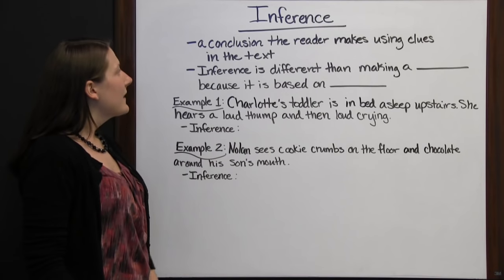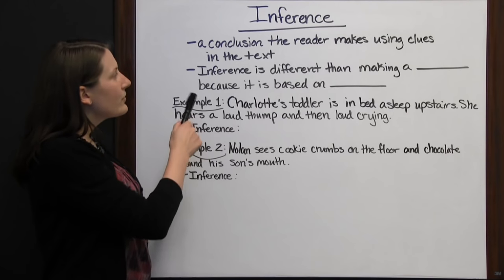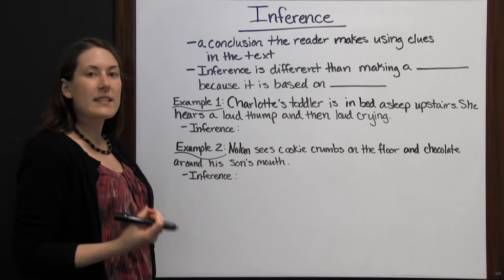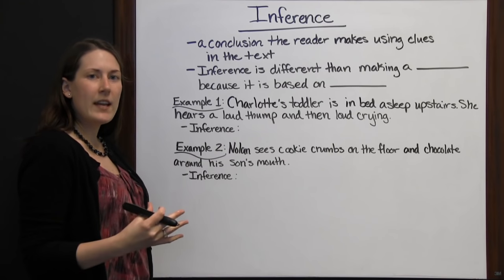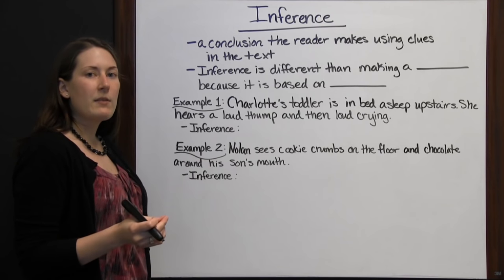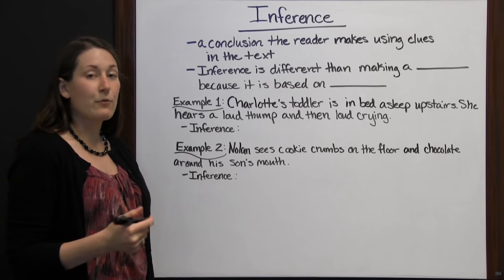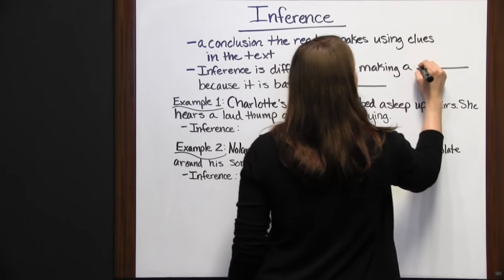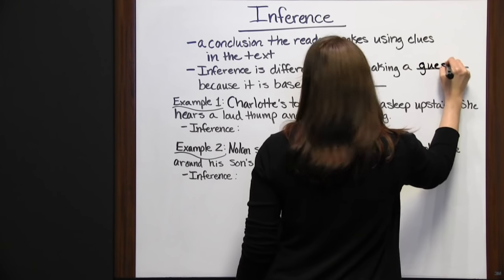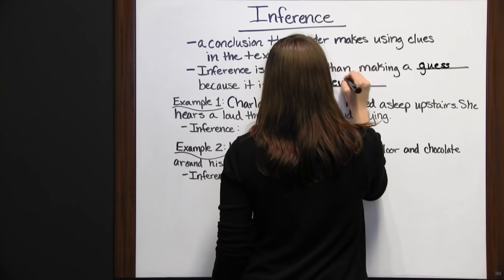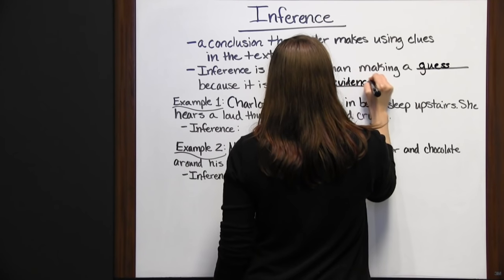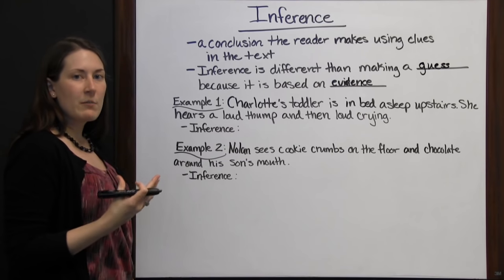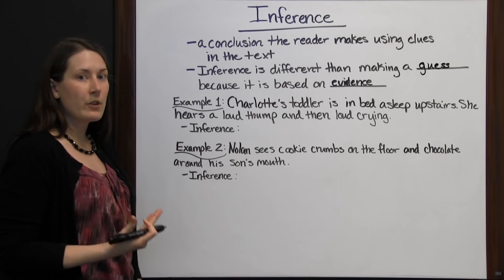Inference. Inferences are conclusions that a reader makes using clues in the text. An author may not explicitly say something, but they leave little hints behind. You have to connect the dots to form a conclusion. Inference is different from making a guess because it is based on evidence — you read, pick up on the clues the author leaves behind, and put them all together to form your inference.